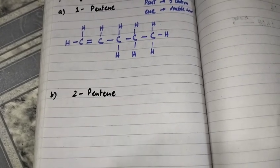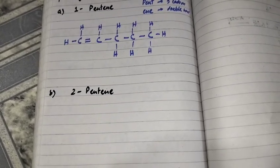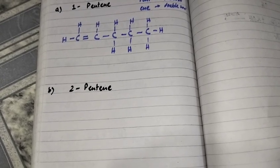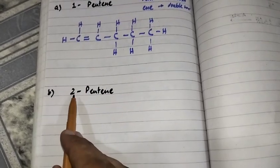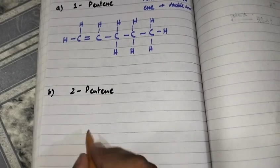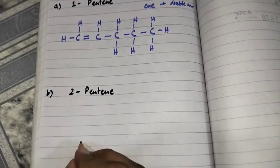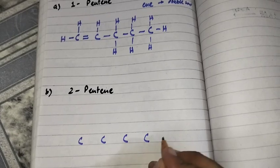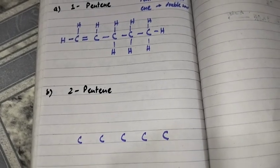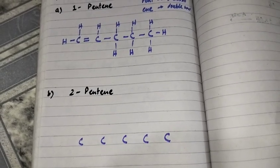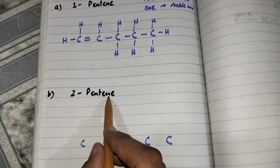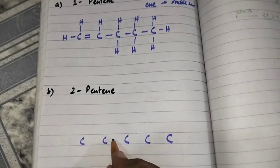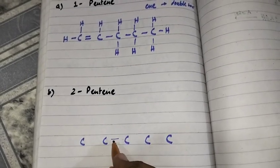This is the structural formula for 1-pentene. Now for 2-pentene: 'pent' represents five carbon atoms, 'ene' represents a double bond, and the position of the double bond is at the second carbon. So the five carbons are one, two, three, four, five, and the double bond is between the second and third carbon atoms.